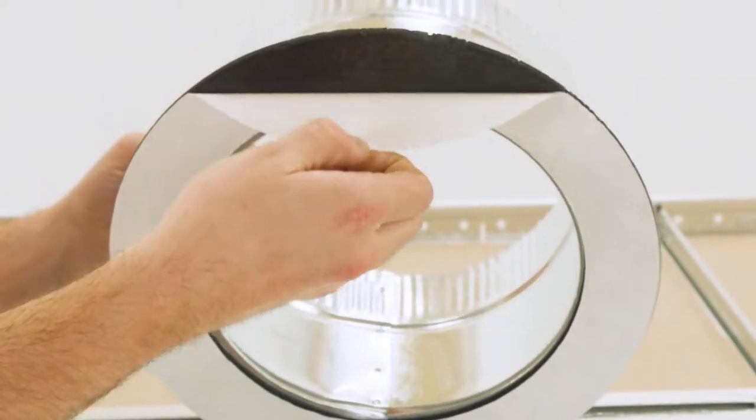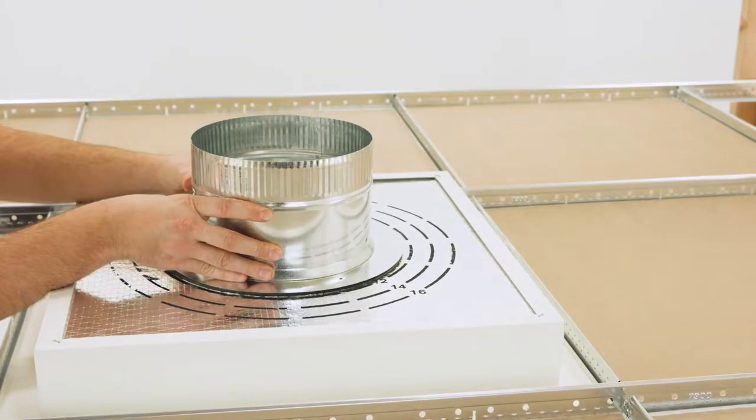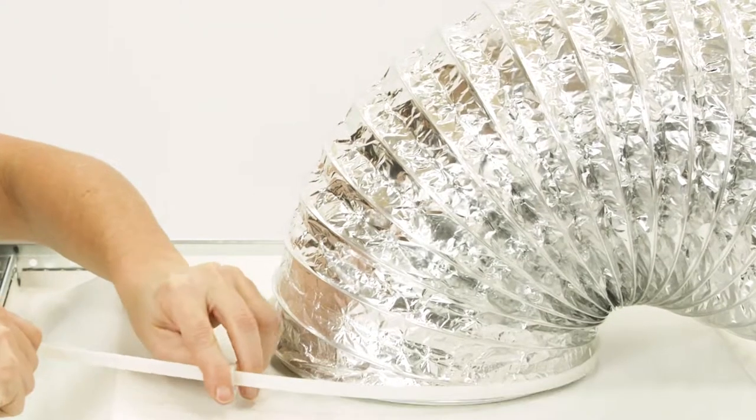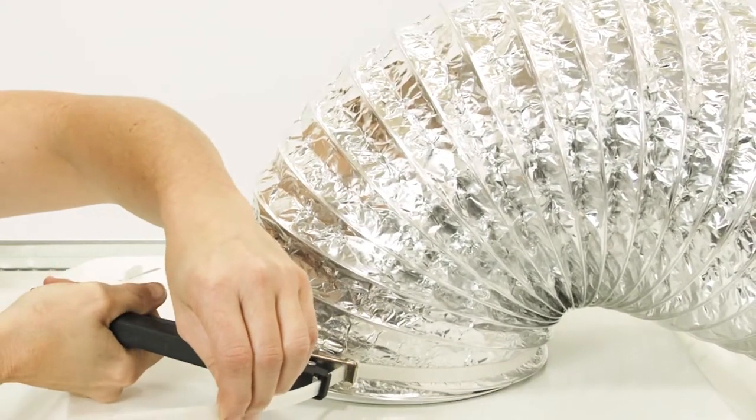Then remove the adhesive and fix the ring in place. Now, feed the aluminum duct around the rim of the collar and secure it with a zip tie and tensioning tool.